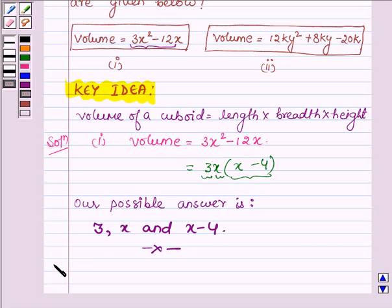And now proceeding to the second part where the volume of the cuboid is given as 12ky² + 8ky - 20k.